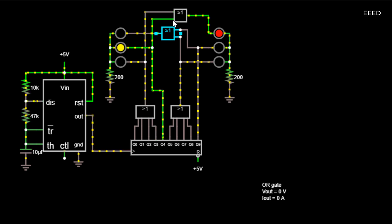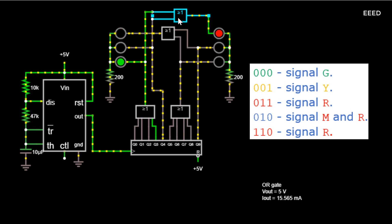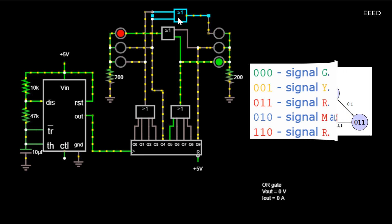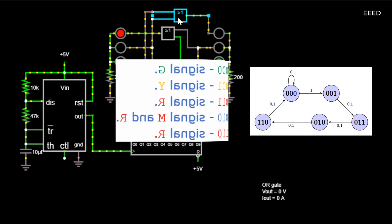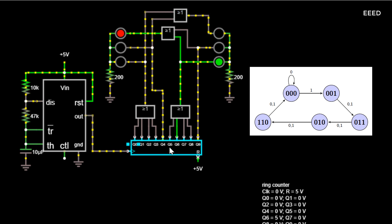State Diagram. Each step in the sequence will map to one state. We'll number them using a binary code: 000 — signal G; 001 — signal Y; 011 — signal R; 010 — signal M and R; 100 — signal R. From this we can create the state diagram. The input used in the diagram is B. The outputs are not shown, as this is a Moore model and showing these outputs in the table given below suffices.